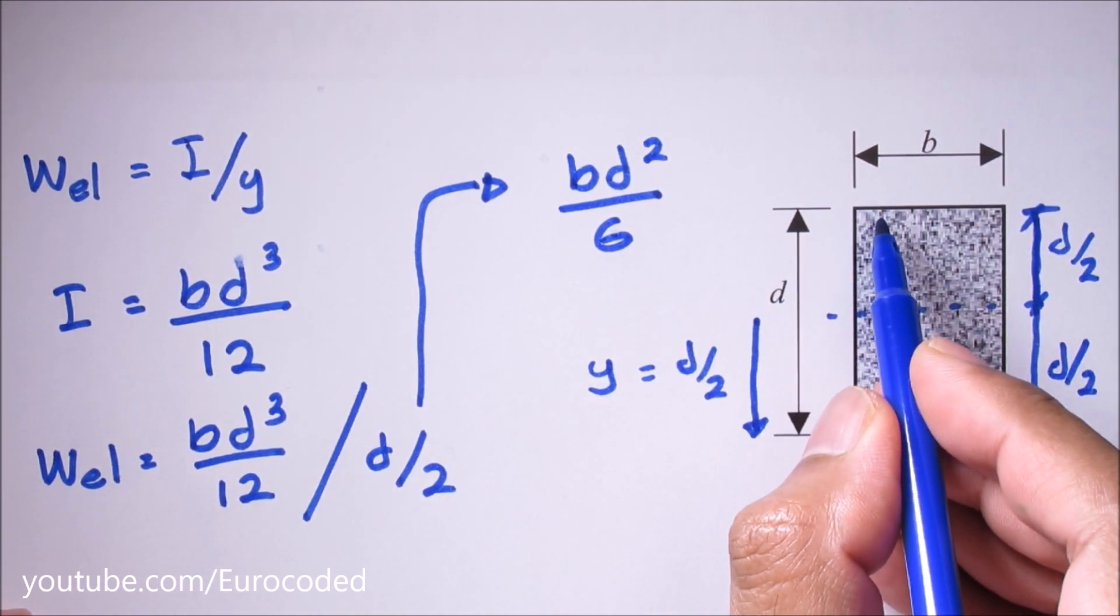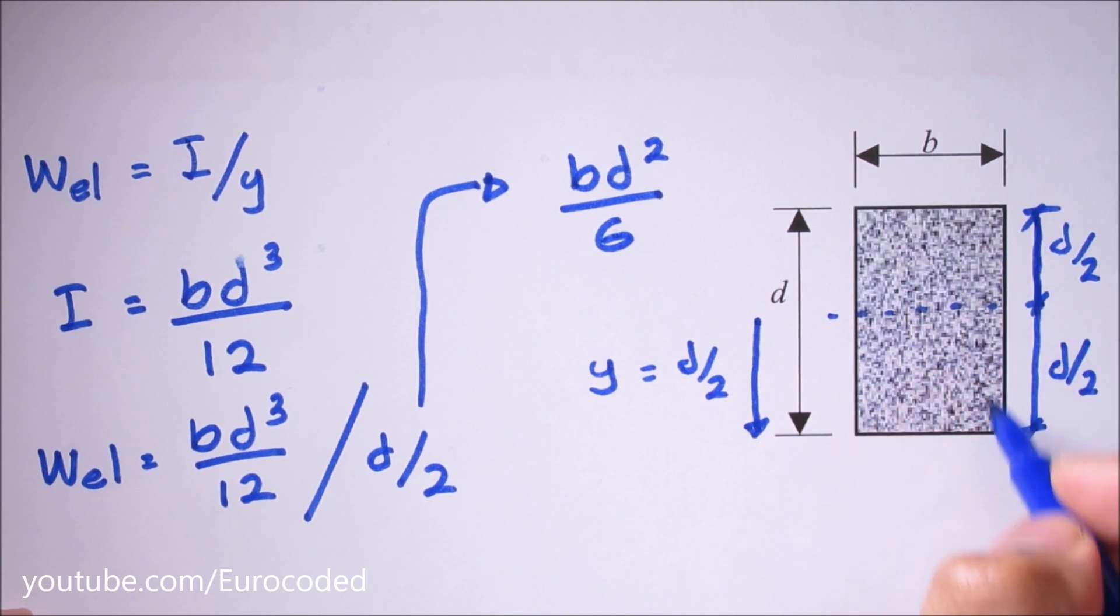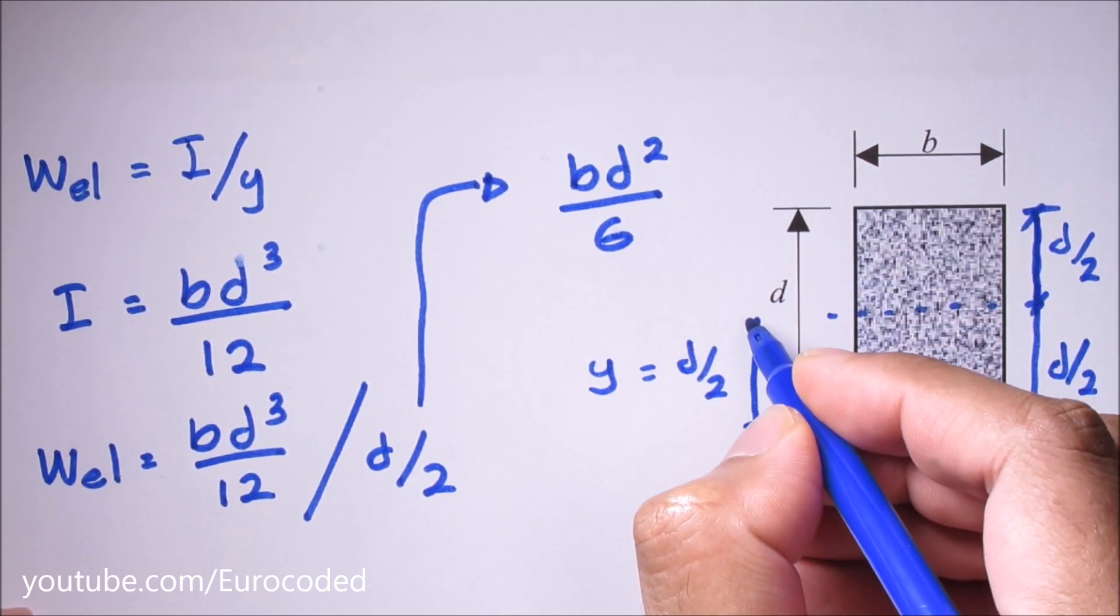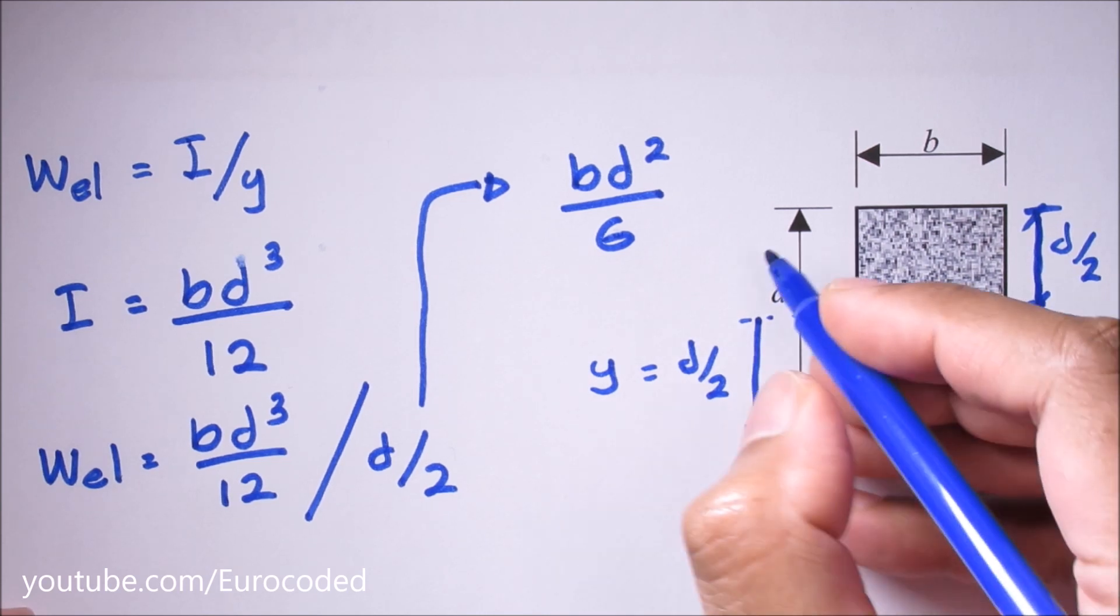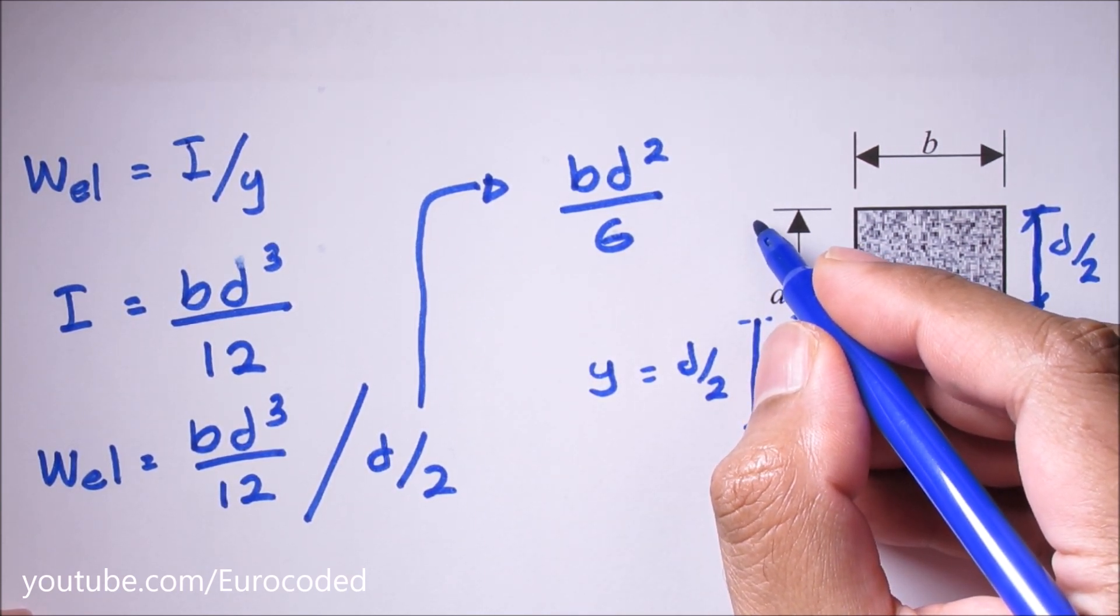Obviously if you calculate the same for the top fiber it is going to be the same for this rectangular case, as the distance from this neutral axis to the top fiber is also d over 2.